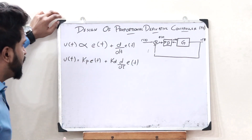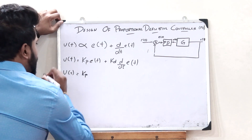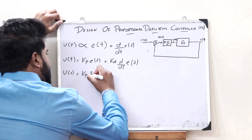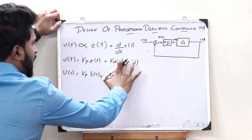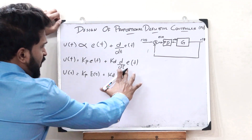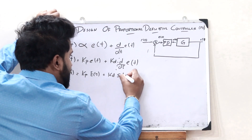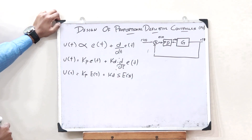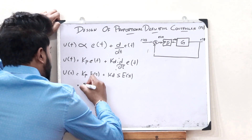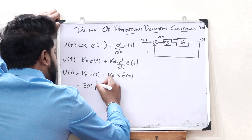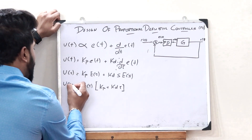Now upon taking the Laplace transform, we would get capital U of S = Kp·E(S) + Kd times the derivative of E of T. The Laplace transform of the derivative of E of T is given as S·E(S). So now we can take E of S as common outside, giving us U(S) = E(S) multiplied by (Kp + Kd·S).